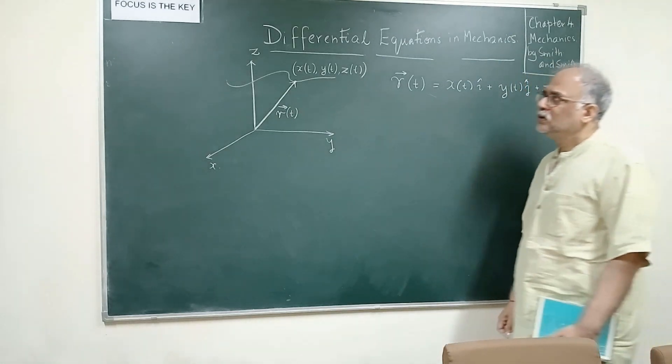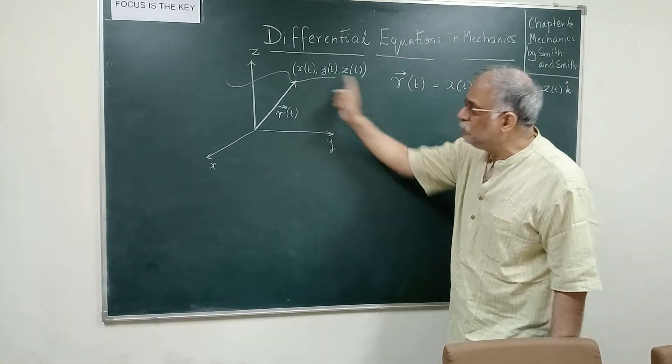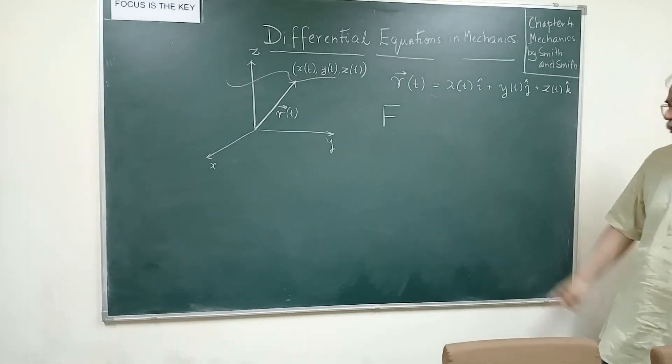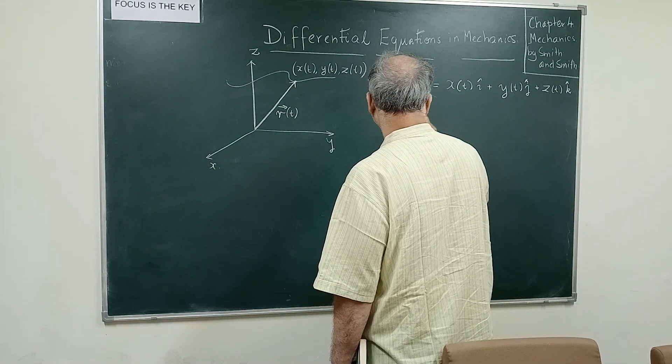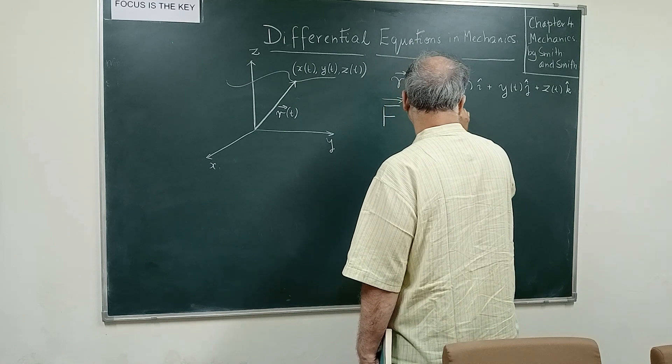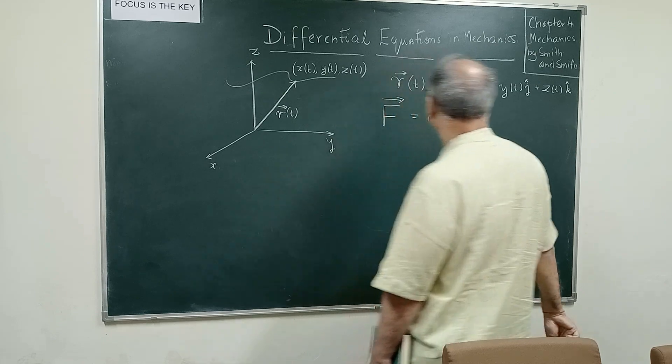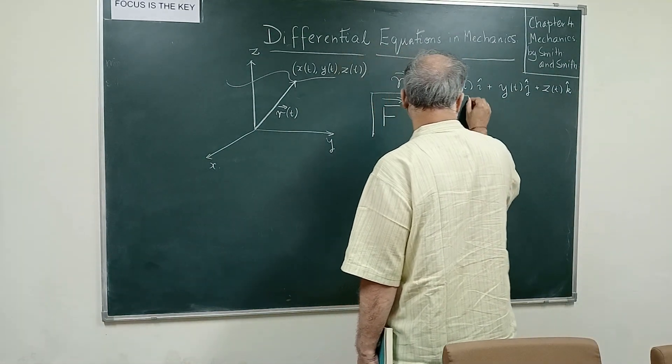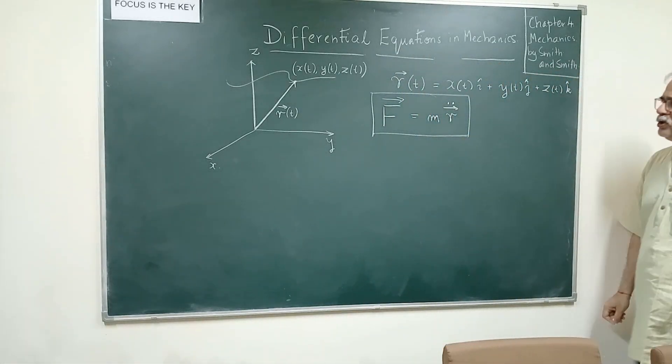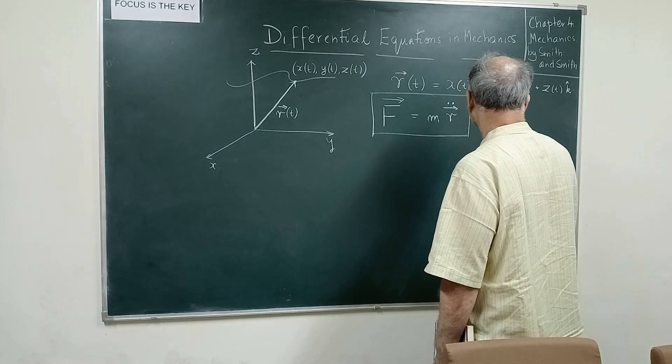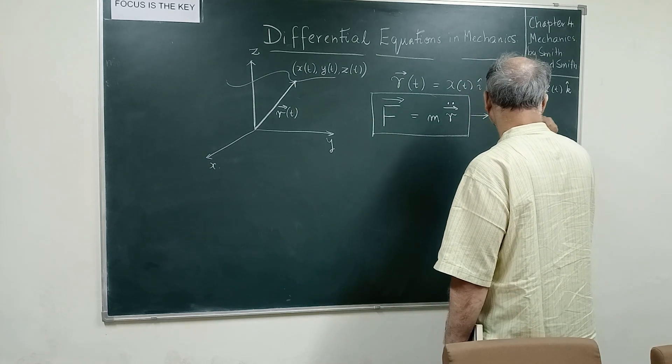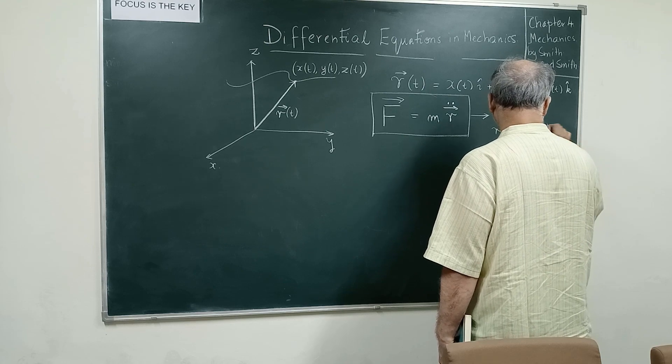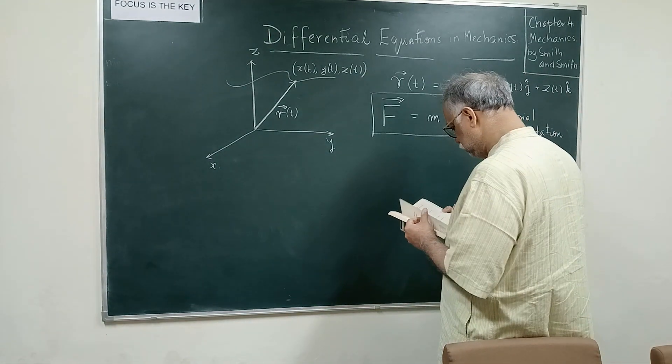Now suppose this thing is in a force, and this is moving because forces have been applied on it. The key law describing the motion of this body is Newton's second law of motion which is given as F equals m into double derivative of the radius vector which is acceleration. Force is mass into acceleration. This is a vectorial representation of Newton's second law.